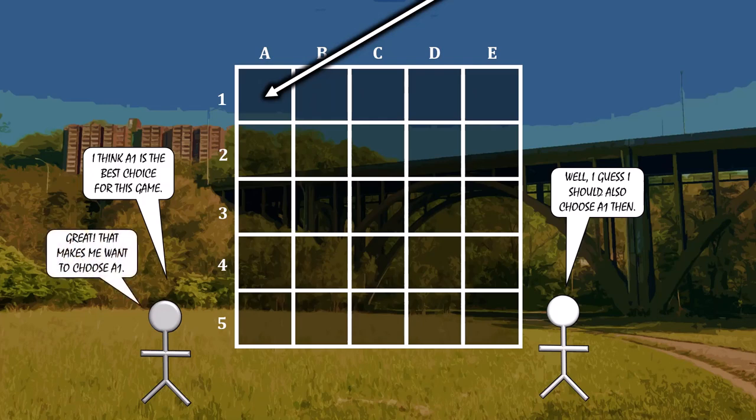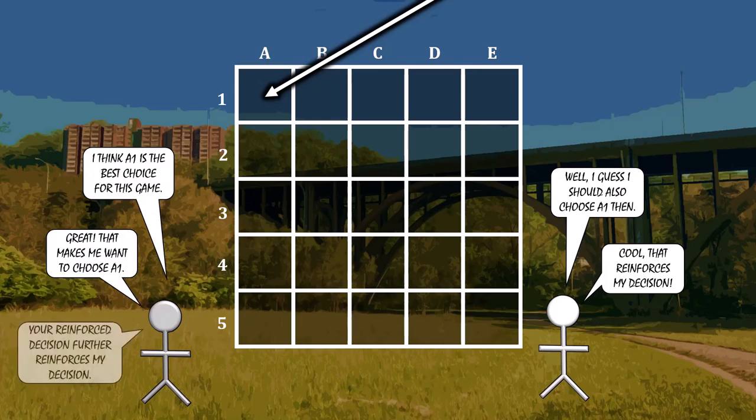But if the second person thinks that, that's going to make the first person definitely want to choose A1, which reinforces the second person's decision to follow up with A1, which reinforces the first person's original decision, and so forth. This is the basic idea behind Nash Equilibrium. It's a self-fulfilling prophecy. If one person thinks that this is going to happen, that makes the other person want to follow through with what they were thinking about doing, which makes the first person want to follow through, which makes the second person want to follow through, and so forth, with infinite regress.